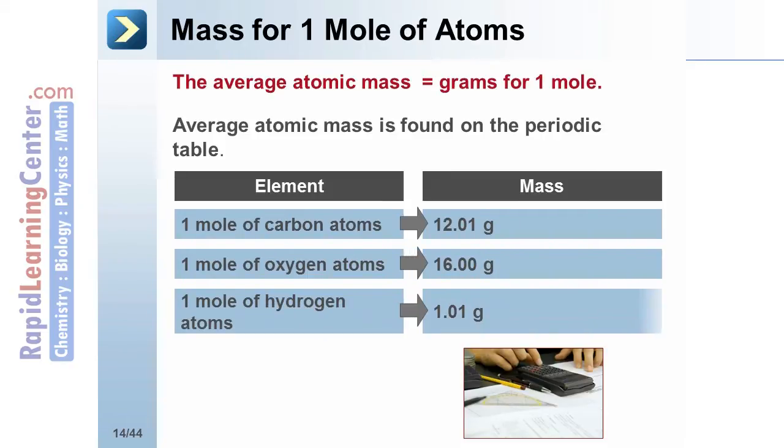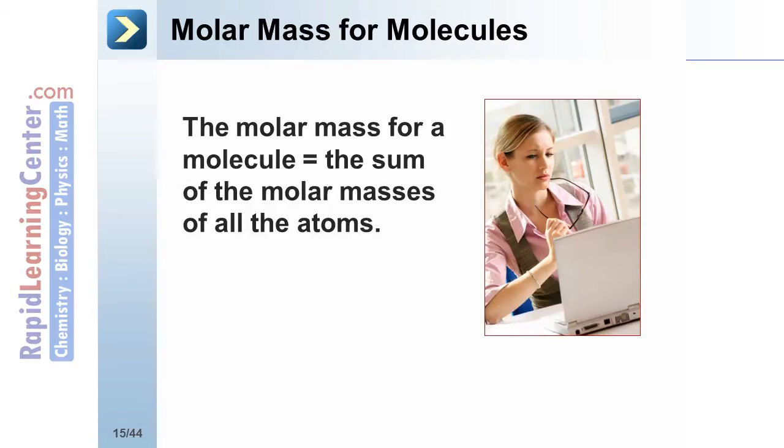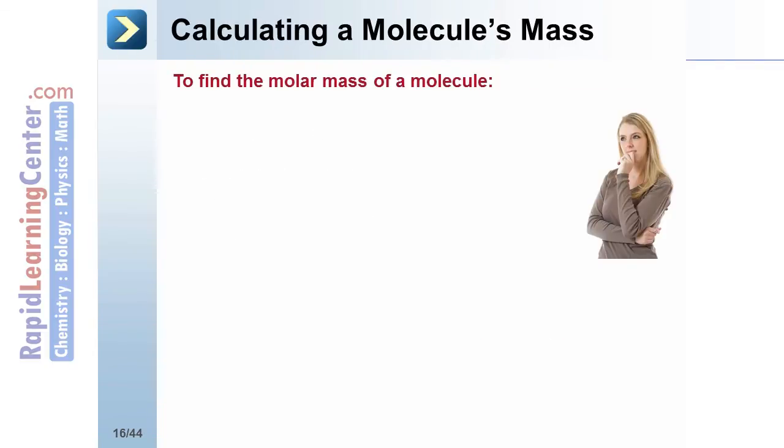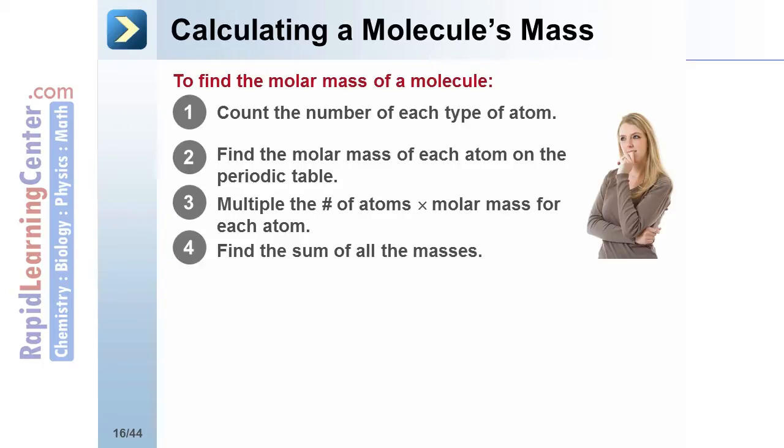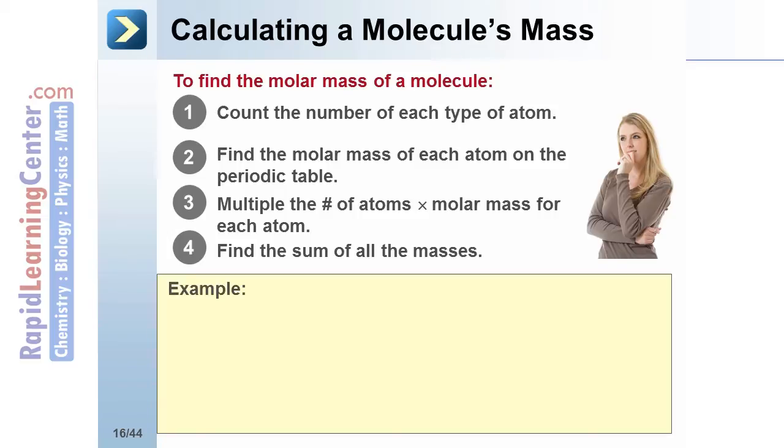Several element atomic masses are shown here. The molecular mass for a molecule is the sum of the molar masses for all the atoms. If you add all the pieces together, you'll get the mass of the whole molecule. In order to find molar mass, determine the number of each type of atom. Find the molar mass of each atom on the periodic table. Multiply the number of atoms times the molar mass for each atom. Find the sum of all the masses.